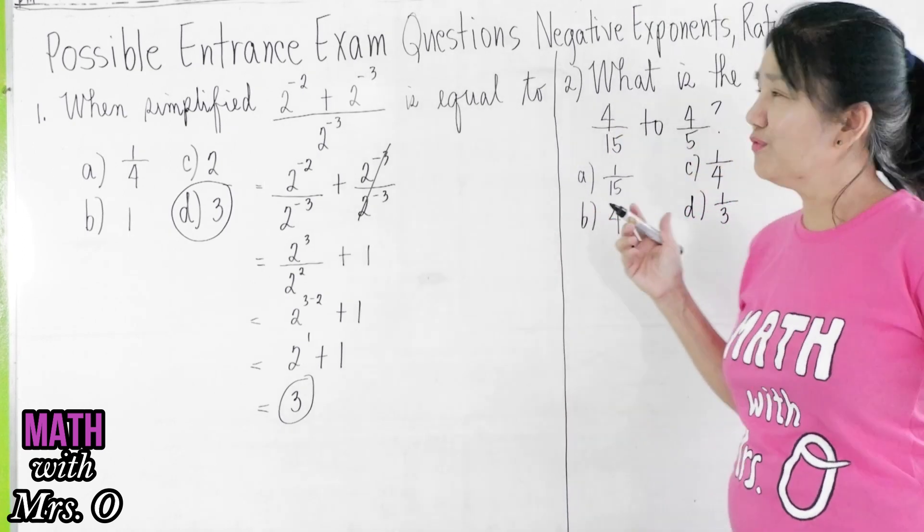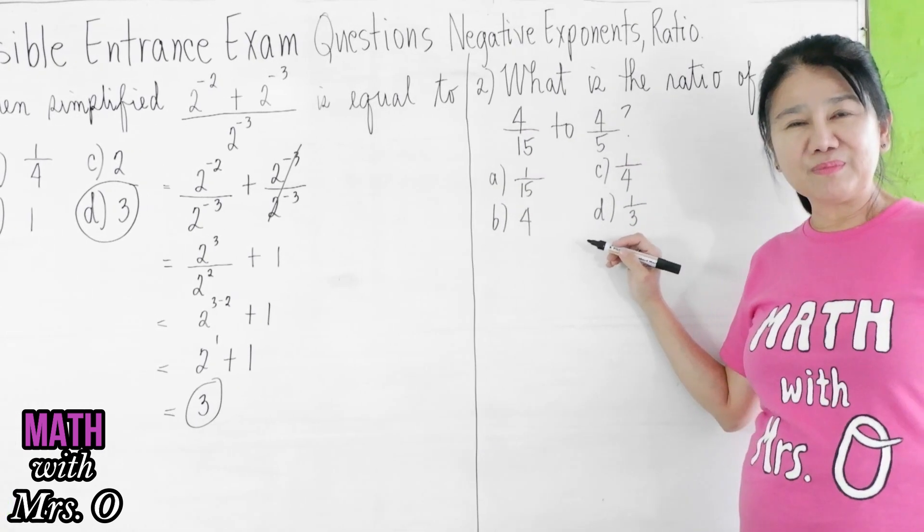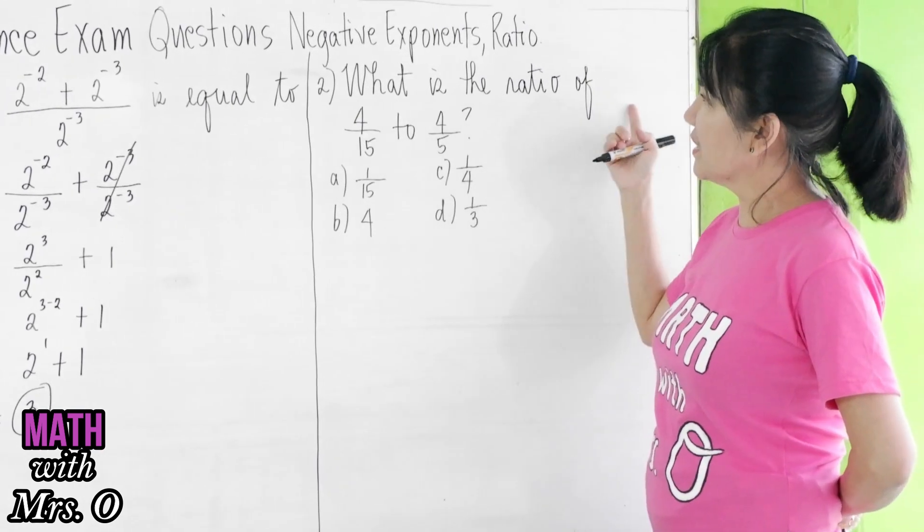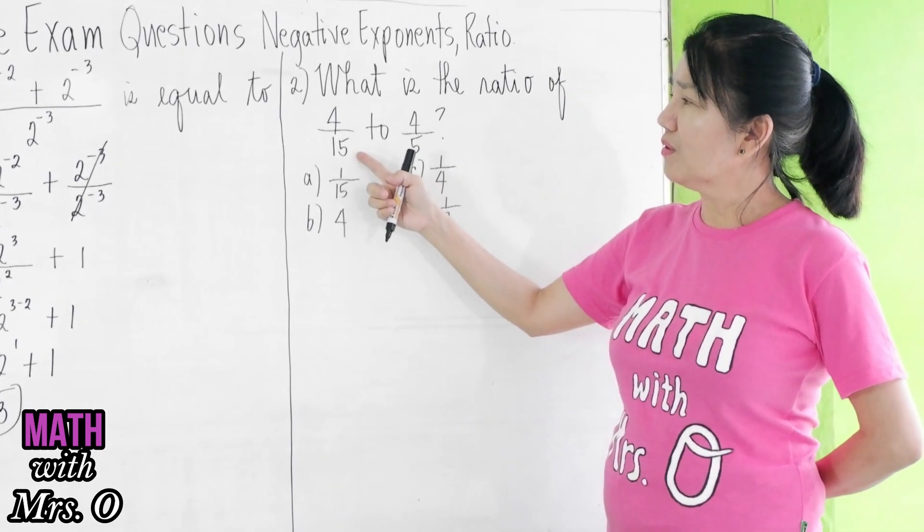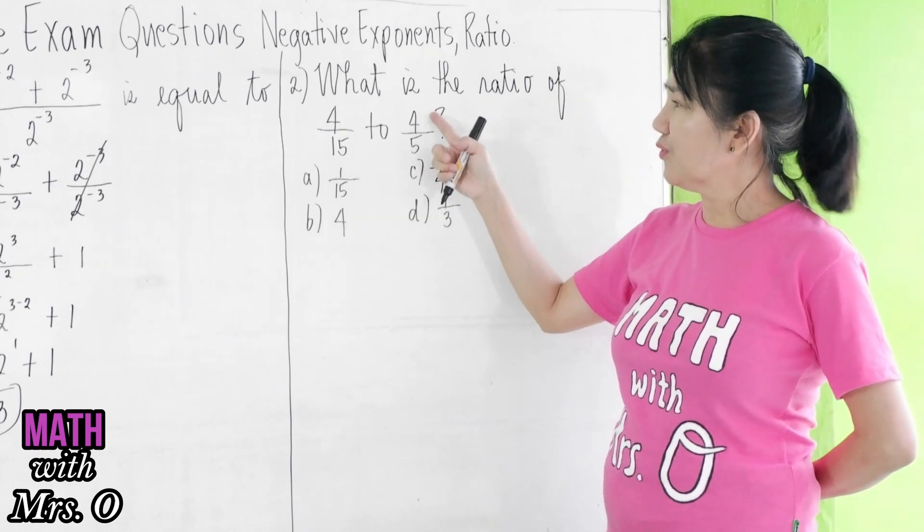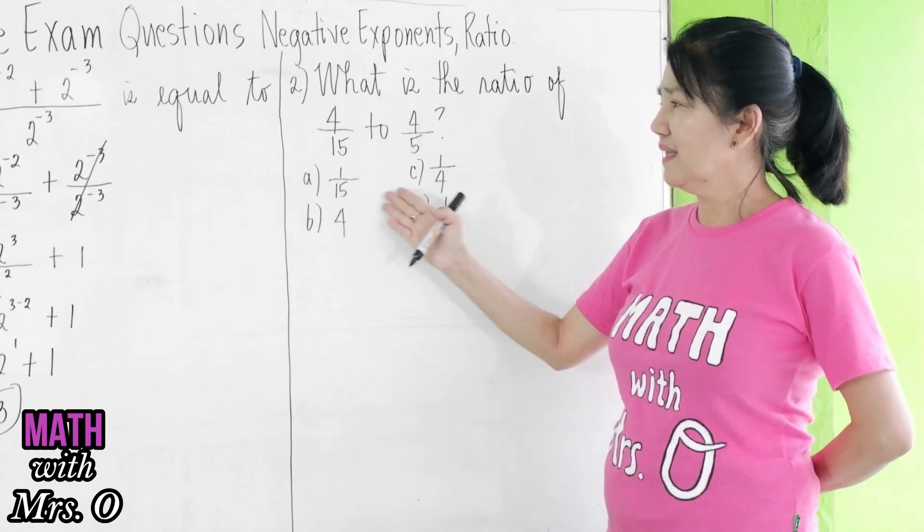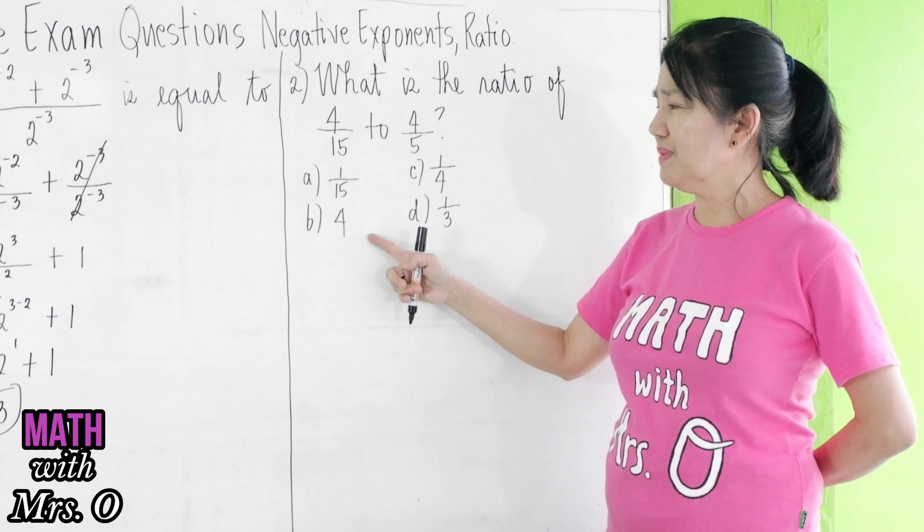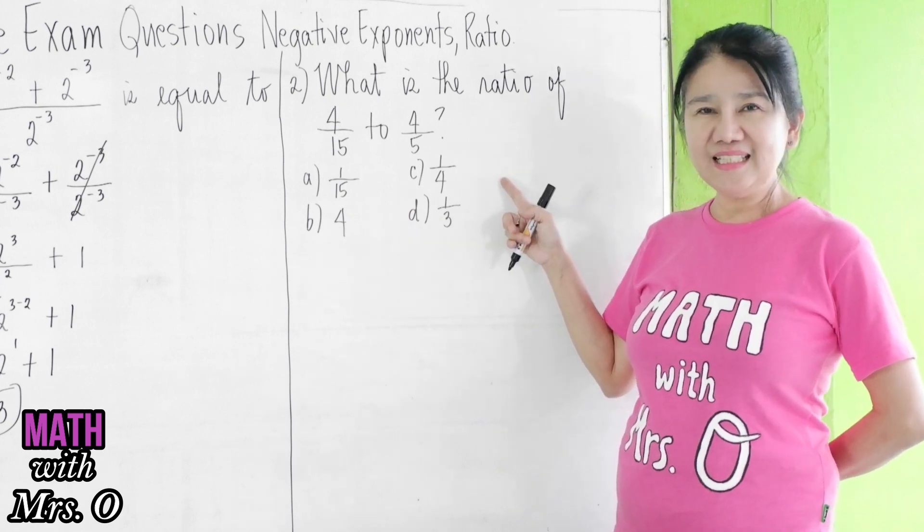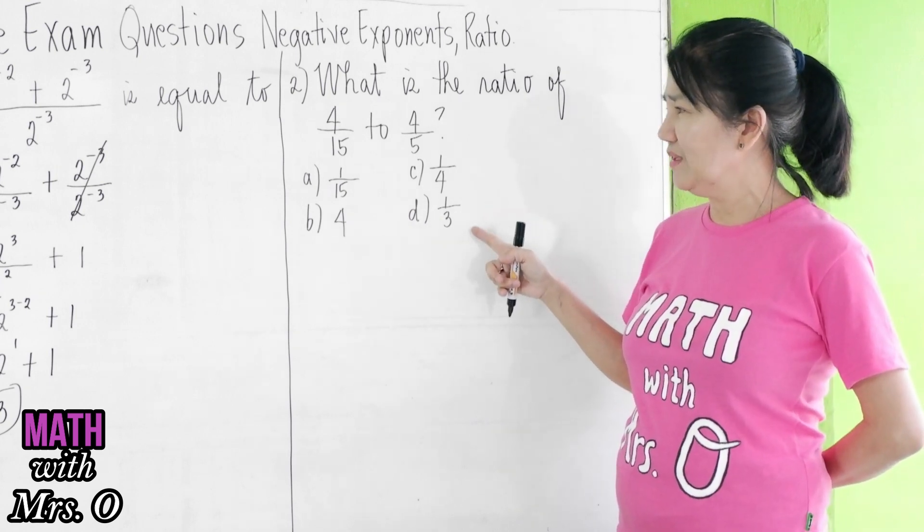Now, let's move on to problem number 2. What is the ratio of 4 over 15 to 4 over 5? a) 1 over 15, b) 4, c) 1 over 4, and d) 1 over 3.